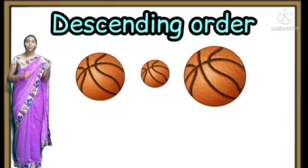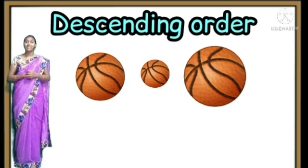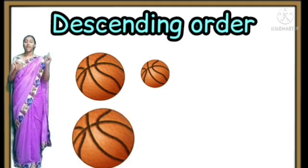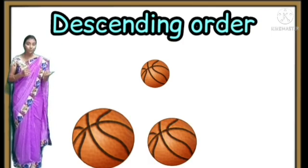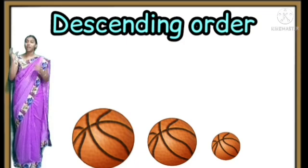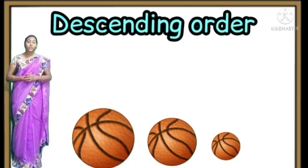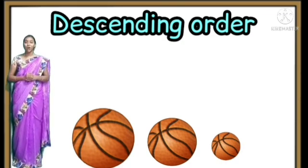Look at the balls here. There are three balls again. We are going to arrange them from the bigger one to the smaller one. Which ball is the bigger one? The one at the last. The bigger ball has to come first. Then of the remaining two, which is the bigger one? The one in the first. That one comes in the middle. And the smallest one comes last. Arranging numbers from the biggest one to the smallest one is called descending order.